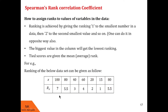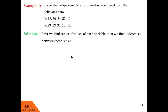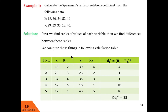Now let us proceed with some real examples. We are asked to calculate Spearman's rank correlation coefficient from the following data. Here we are given data values for x and y, each set consisting of 5 values, so n is 5. We will first find ranks of values of each variable, then find the differences between these ranks, and compute these in the following calculation table. The table has columns for serial number, data values of x and y, their corresponding ranks, and the square of the difference between the ranks.